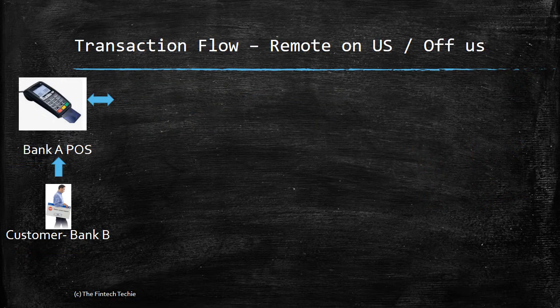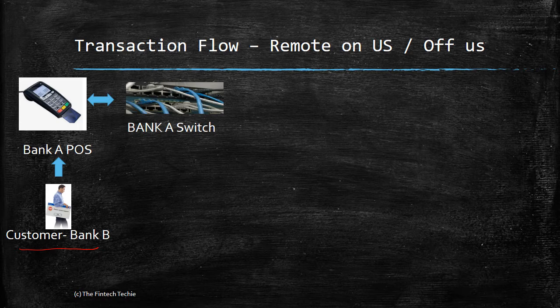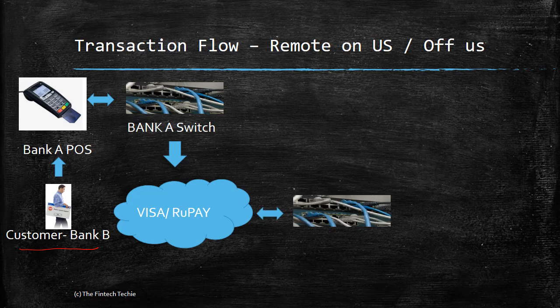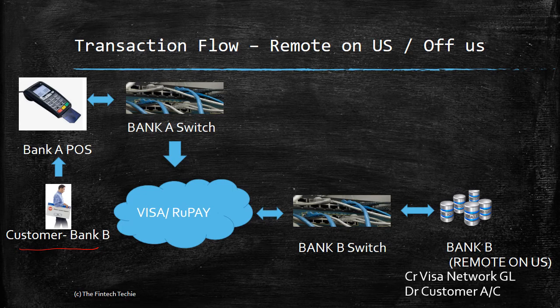The next scenario is a remote on-us or off-us transaction. Here, a customer of Bank B goes to a merchant whose POS is owned by Bank A — so the issuer is Bank B and the acquirer is Bank A. The request goes to Bank A, which identifies it belongs to a different bank and routes it to Visa or RuPay based on the first six digits of the card. Visa identifies it as Bank B's card, and Bank B updates its database: it debits the customer account and credits the Visa network GL. For Bank B, this is a remote on-us transaction.